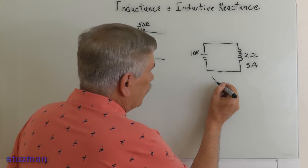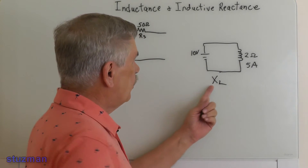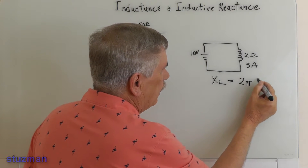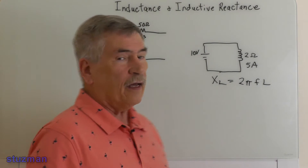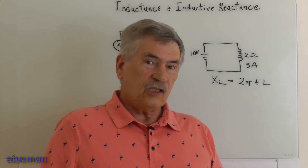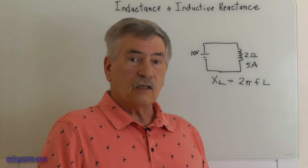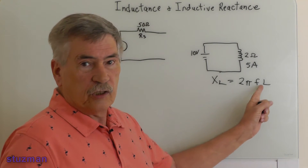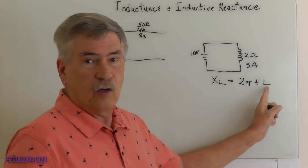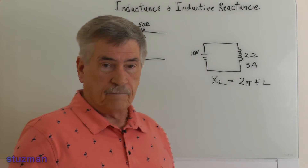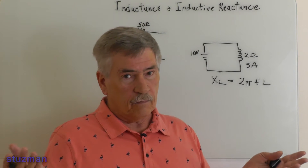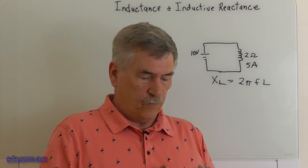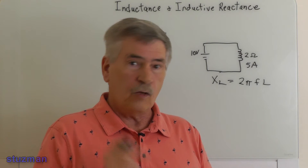The inductive reactance formula: XL — where X is reactance and L is inductance — is equal to 2π times F times L. Two pi is for the circumference, essentially going around a circle for one cycle of a generator. F is frequency, and L is inductance, which is measured in henries. A henry is where an inductor will induce one volt for one amp of change in current in one second.